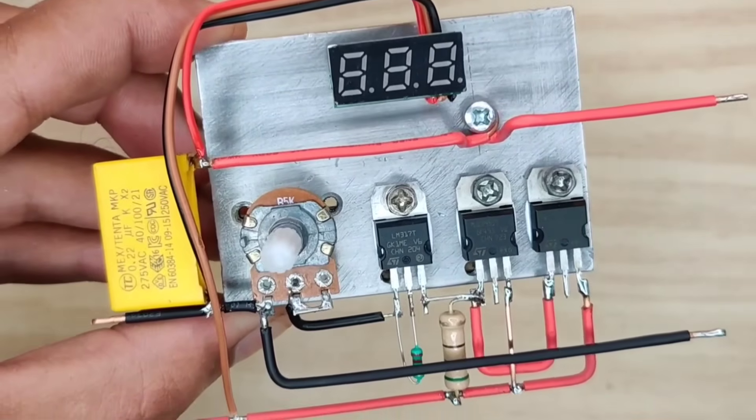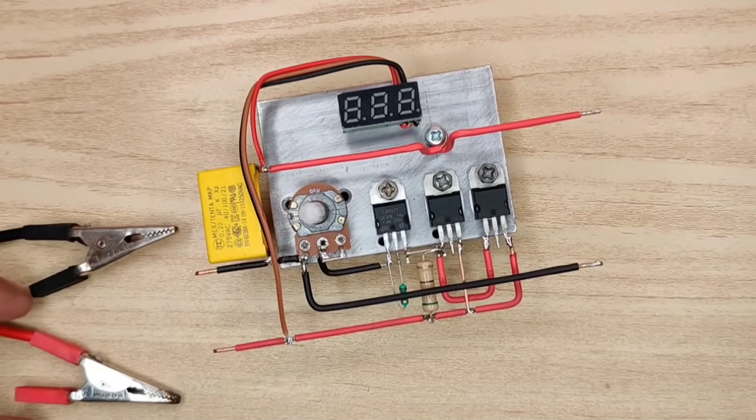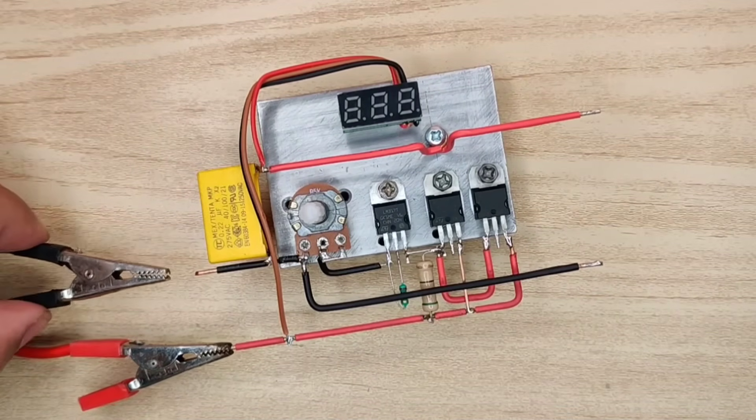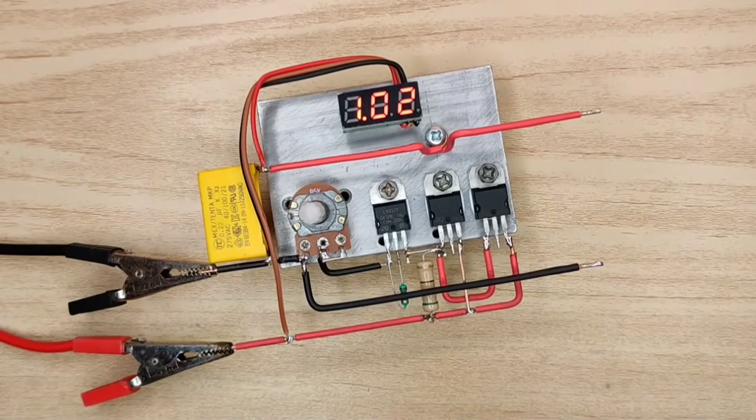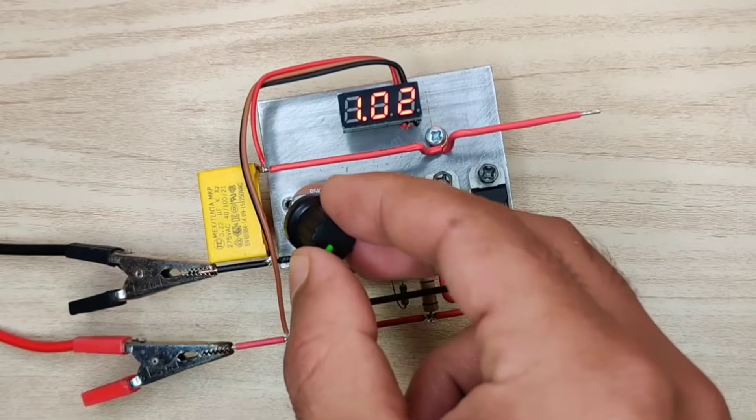Now our circuit is ready to test. I connected a 24 volt input DC supply, and of course use a knob for easy output adjustment.